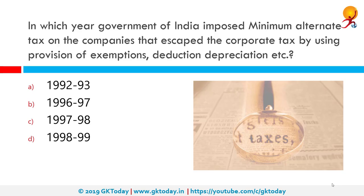In which year did the government of India impose Minimum Alternate Tax on companies that escaped corporate tax by using provisions of exemptions, deductions and depreciation? The correct answer is 1996-97. All companies that record a book profit shall have to pay a minimum alternate tax at 18.5% plus surcharge and cess as applicable under the Companies Act. Thus MAT is a way of making companies pay a minimum amount of tax.